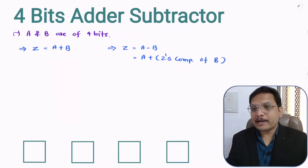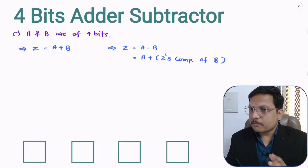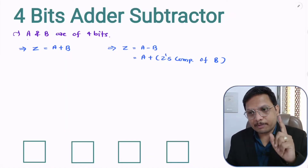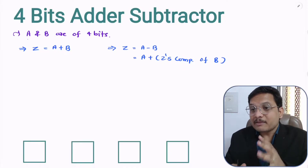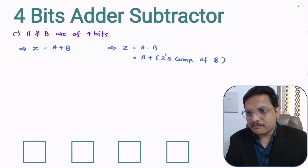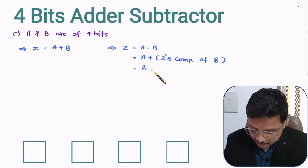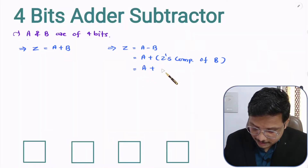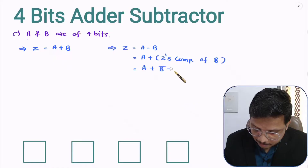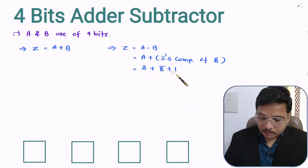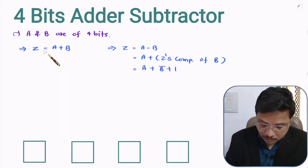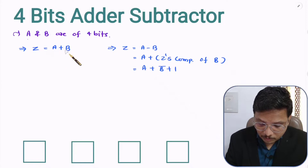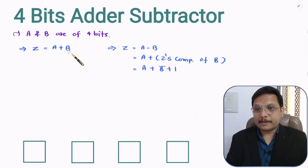Now how to find 2's complement? 2's complement means 1's complement plus 1, and 1's complement means it is the inverted data of that given variable. So here 2's complement of B is B-bar plus 1. So when you want to perform subtraction, you need to compute A plus B-bar plus 1, and when you want to do addition, you simply compute A plus B.